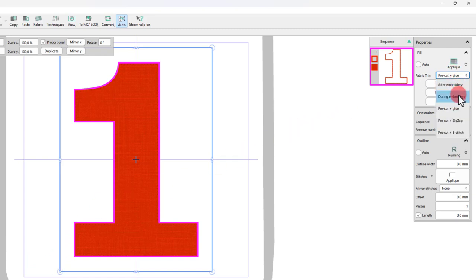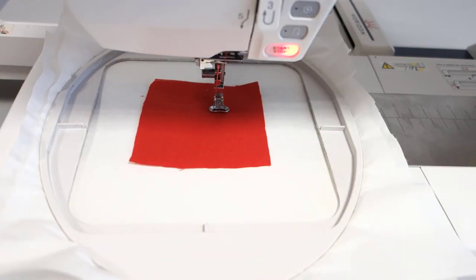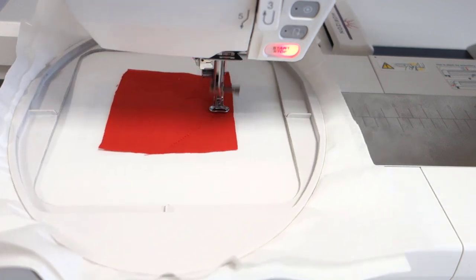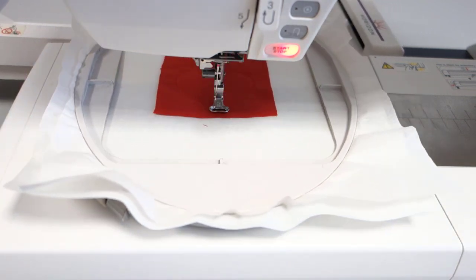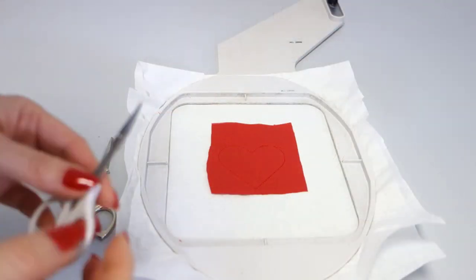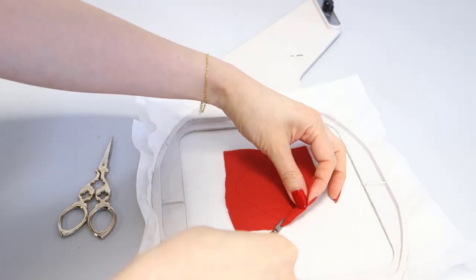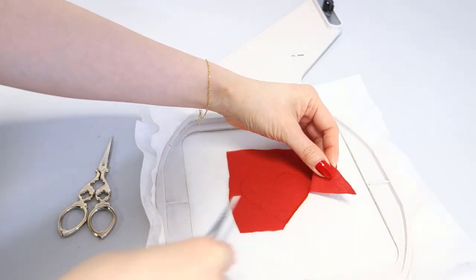In that case, just select Fabric trim option during embroidery and cut the excess fabric manually after the holding stitches are placed. When doing so, the machine stops during embroidery so that you can cut the excess fabric with a sharp pair of scissors.